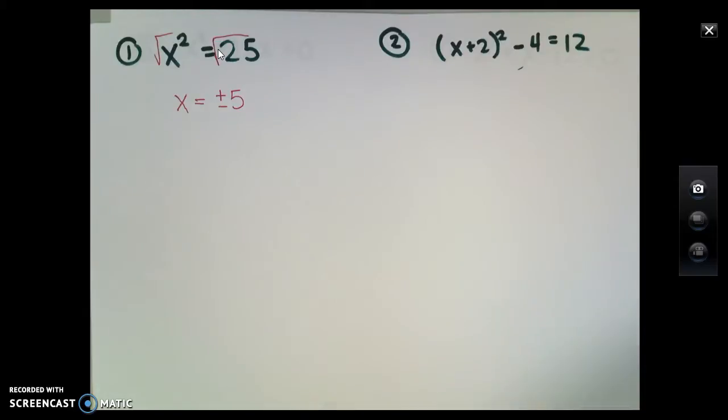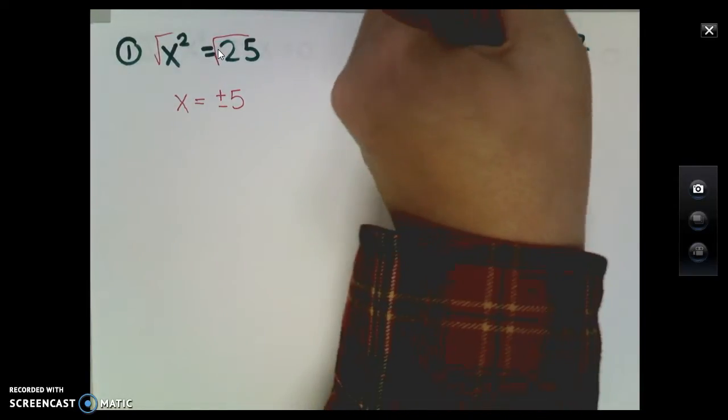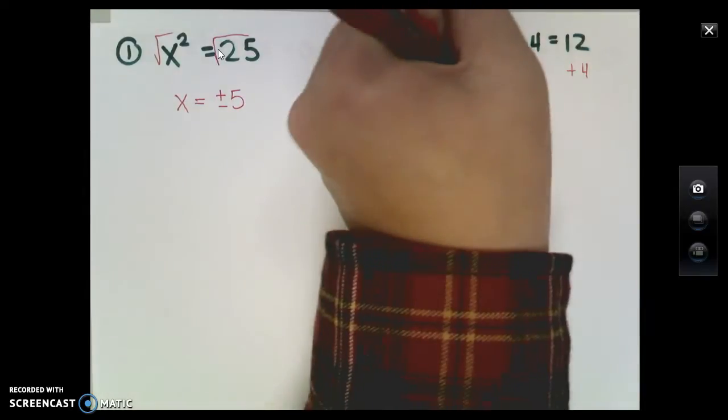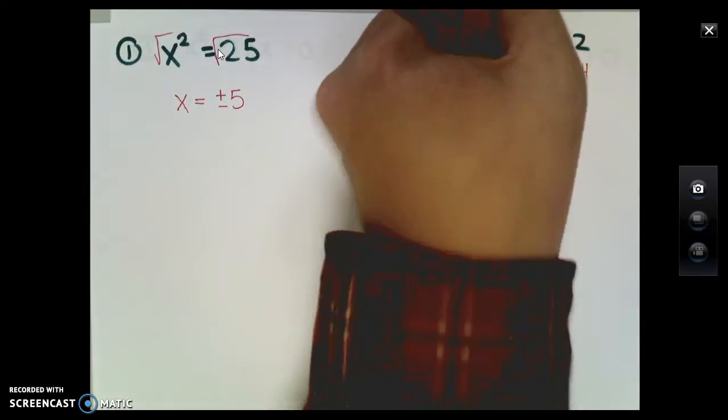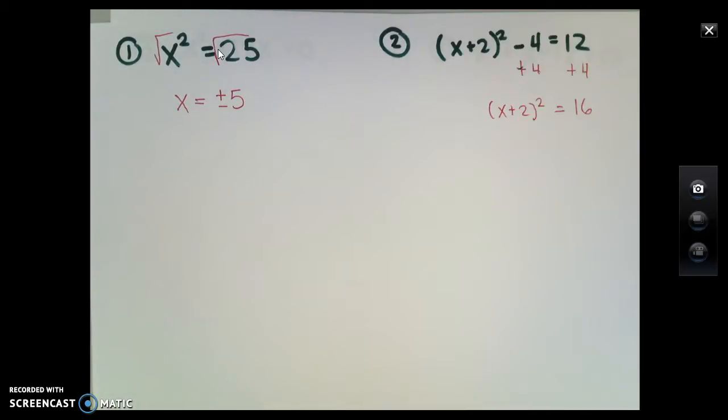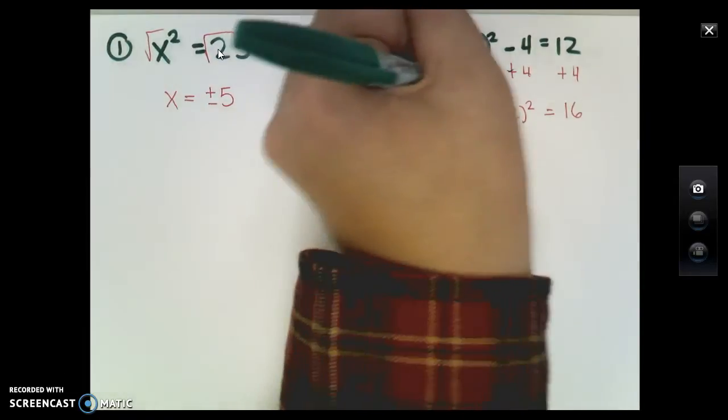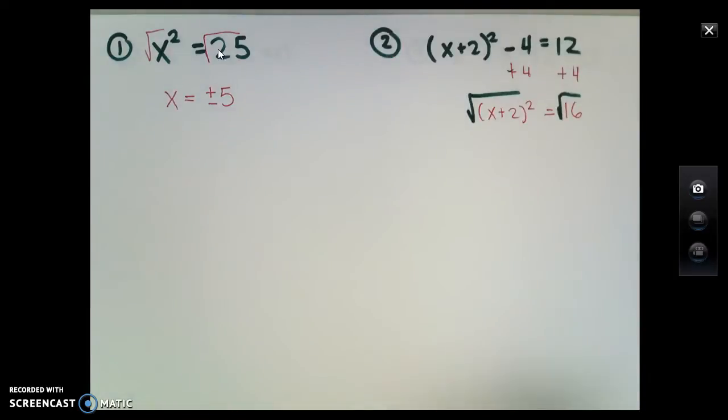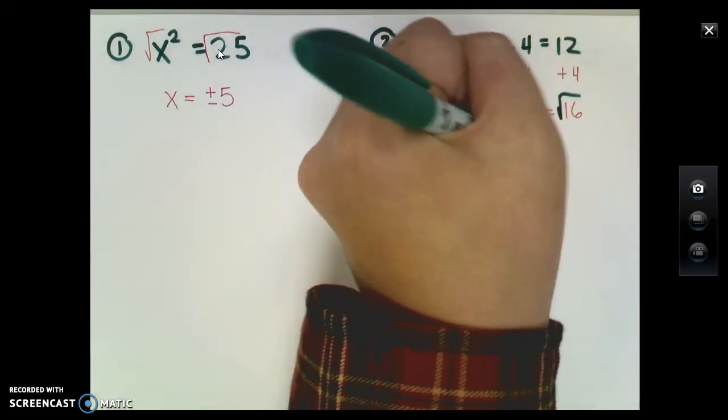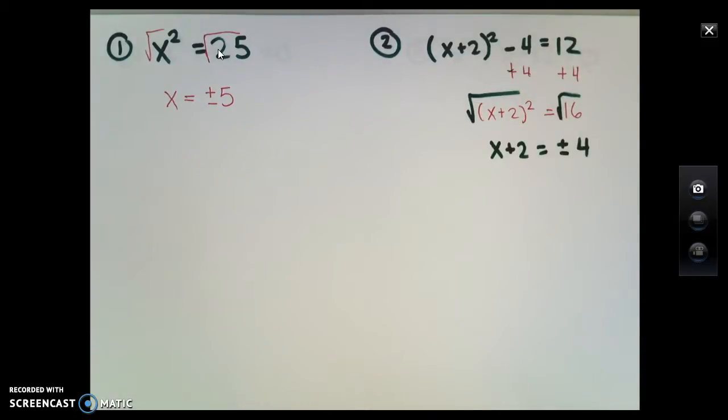In the second example here, x plus 2 quantity squared minus 4 equals 12. Before I take the square root, I have to get rid of the minus 4. So I would add that 4 to both sides, leaving me with x plus 2 all squared equals 12 plus 4, which gives me 16. Once again, this allows me to take the square root of both sides since the x is contained inside that squared term.